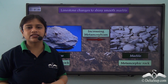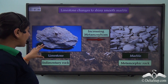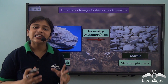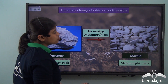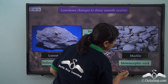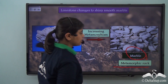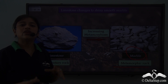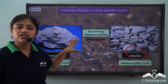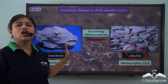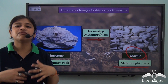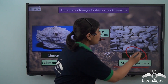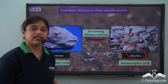Let's take a few examples. Limestone, which is a sedimentary rock, on receiving heat and pressure changes to a metamorphic rock — marble. There is a change in texture: limestone has an uneven or rough surface, but on undergoing metamorphosis it changes to marble with a smoother surface.